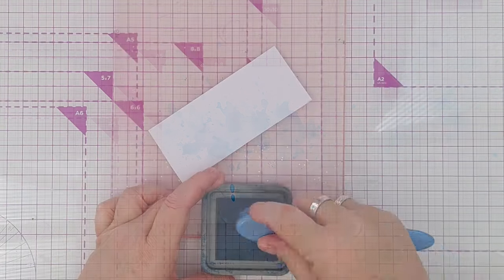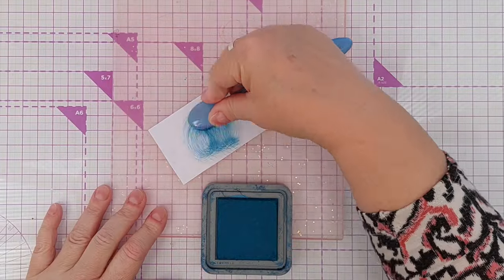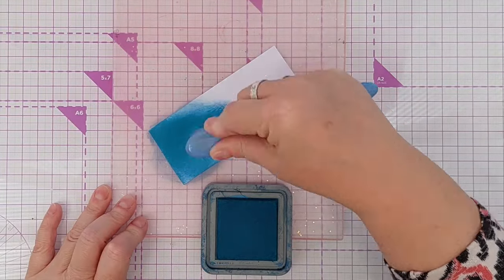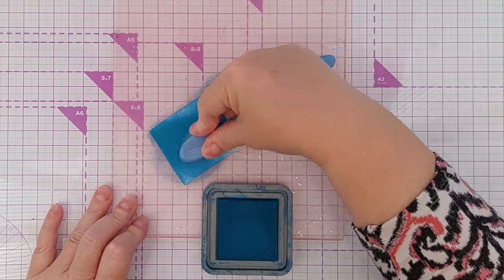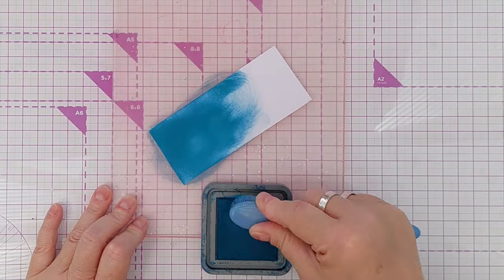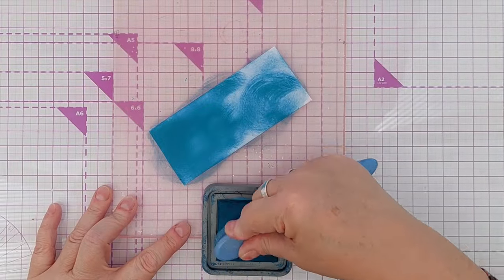Next I took another piece of smooth white card and blended on some uncharted mariner, because I wanted to die cut from this and I wanted it to be significantly darker than the tumbled glass so it stood out really well.